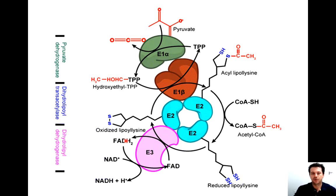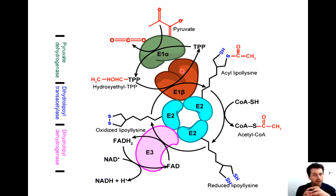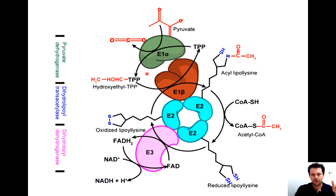Here is the pyruvate dehydrogenase complex. You can see E1 alpha, E1 beta, E2 and E3 — different proteins that combine to make one complex, which converts pyruvate into acetyl-CoA. Many other things are involved: you have NADH, NAD, FADH, and TPP.